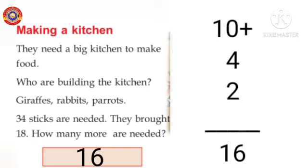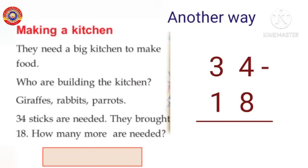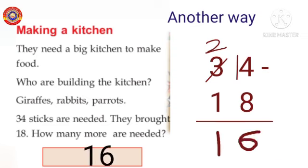Another way: 34 minus 18. In the ones place, the numbers are 4 and 8. We can't subtract 8 from 4, so we take 1 from 3. 3 becomes 2, 4 becomes 14. 14 minus 8 equals 6. 2 minus 1 equals 1. Here, 34 minus 18 equals 16.